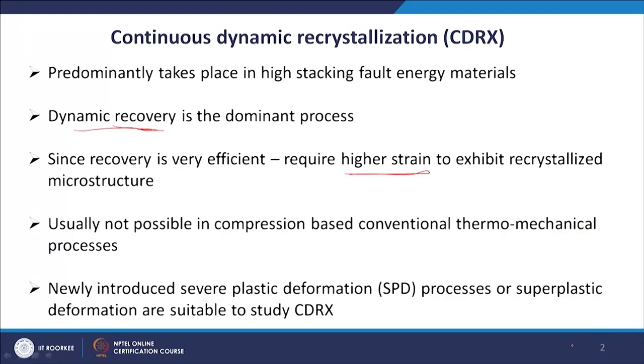Why was this not earlier identified? In conventional thermomechanical processes such as rolling, extrusion, or forging — which are based on the compression cycle — applying very large compressive strain will also induce large tensile strains, and because you have to maintain constant volume, the material will crack under very high compressive strains. So you cannot apply very high compressive strain in normal conventional thermomechanical processing, and that is why people had not observed CDRx before.